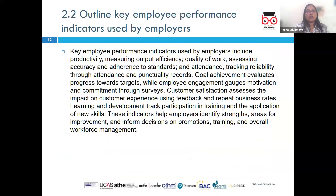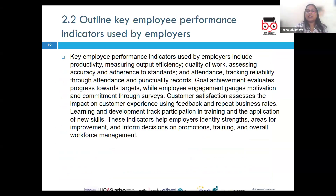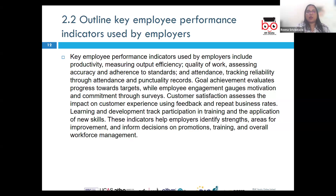Coming to AC 2.2, this requires us to outline the key performance indicators used by employers. KPIs are measurable values used to evaluate an employee's effectiveness and contributions to an organization. They provide insight into how well an employee is performing their role relative to organizational goals and objectives.